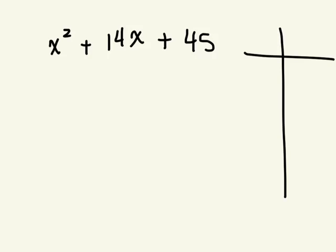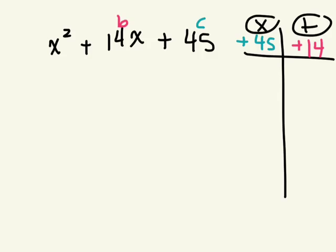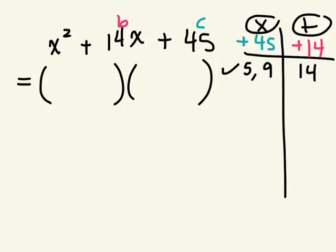You're looking for two things that multiply to give us positive 45 — that's C — and add up to B, which is positive 14. So you're looking for the product and the sum — this is the product-sum method. The answer is positive for both, so the factors are going to be positive. What times what is 45? 5 times 9 is 45, and 5 plus 9 is 14. So factored form is X plus 5 and X plus 9.